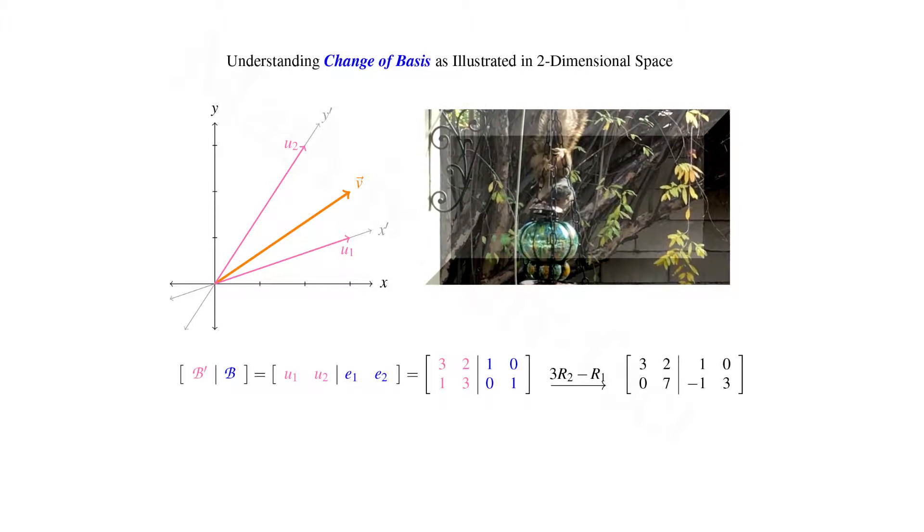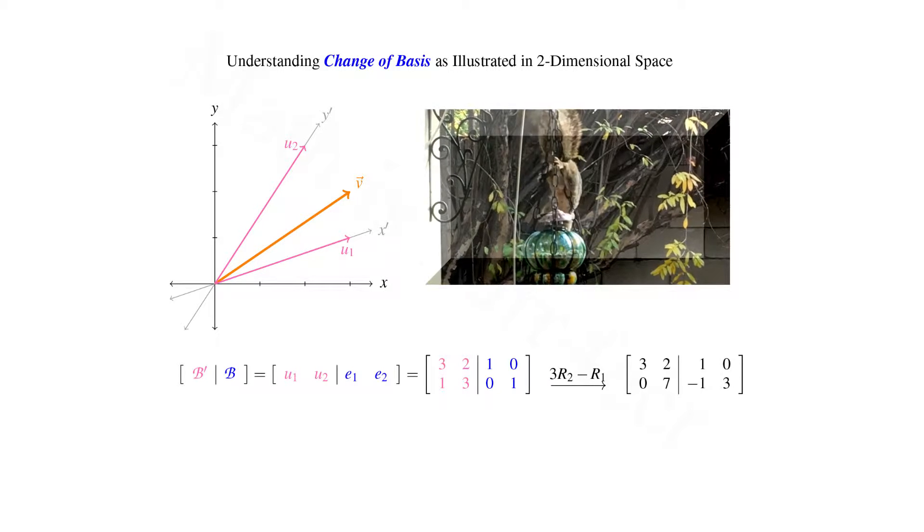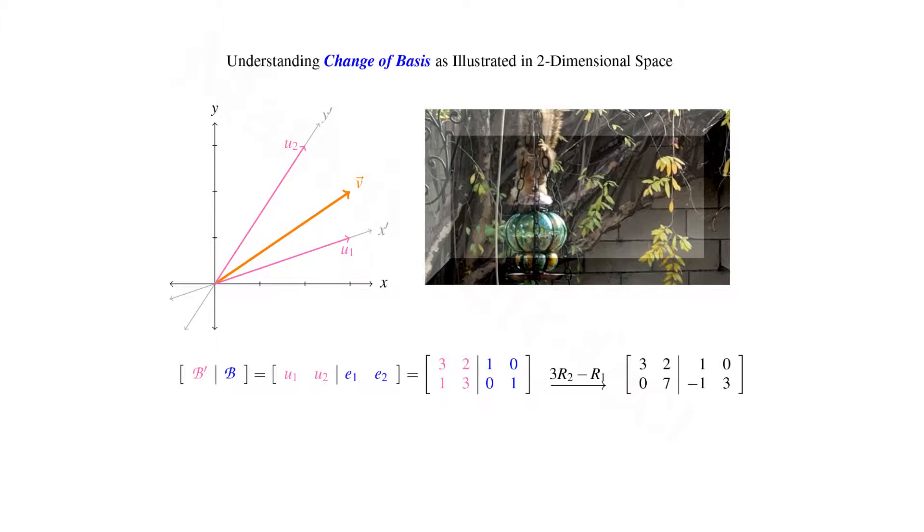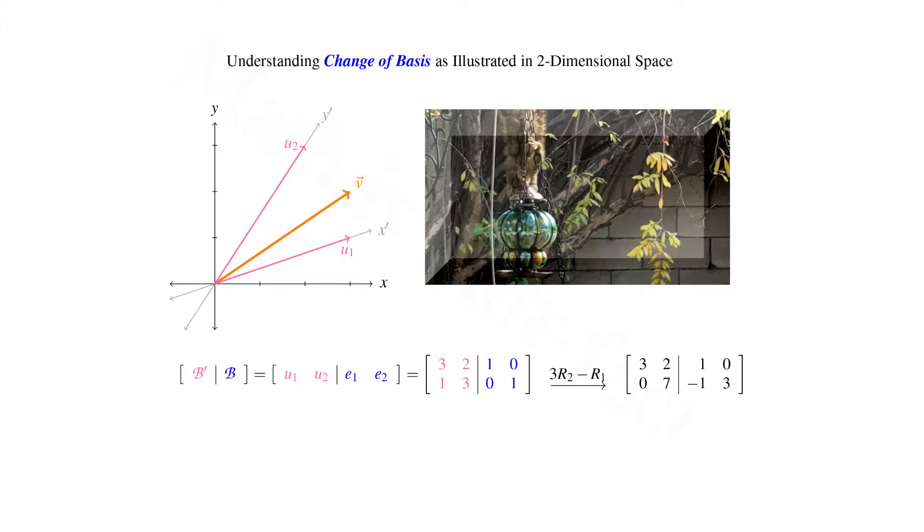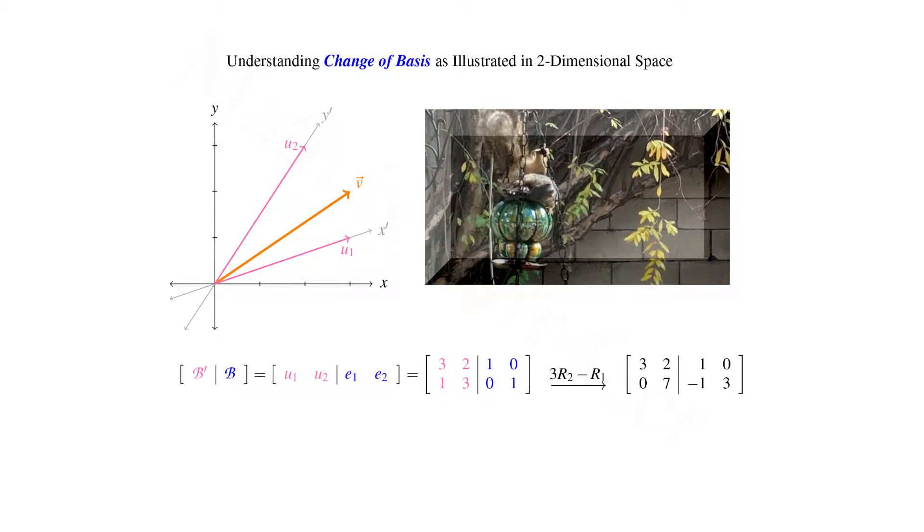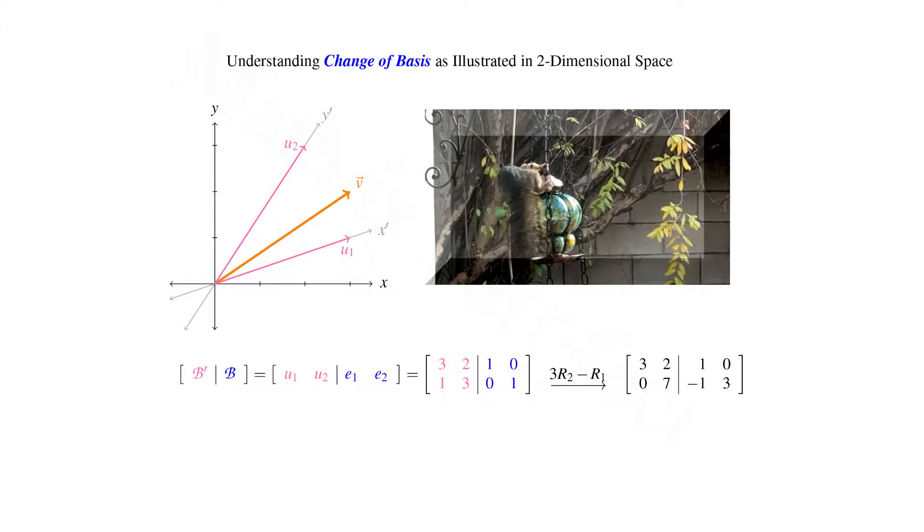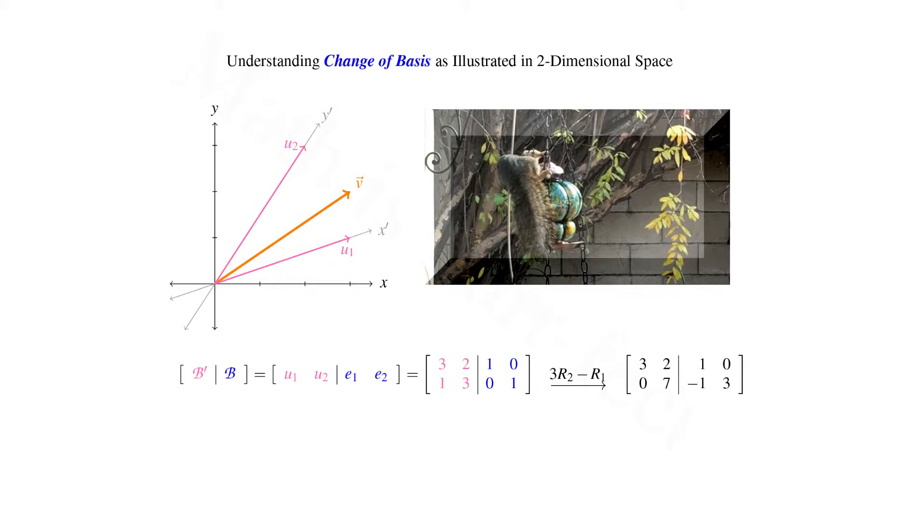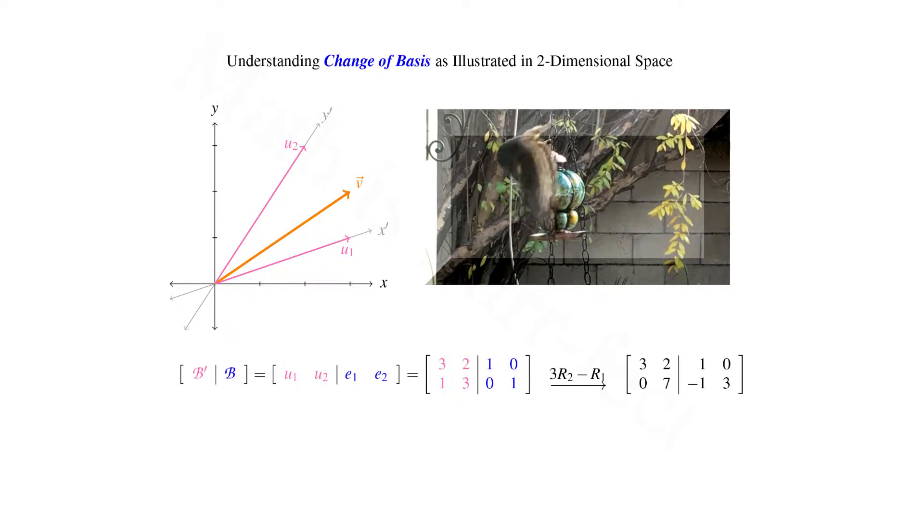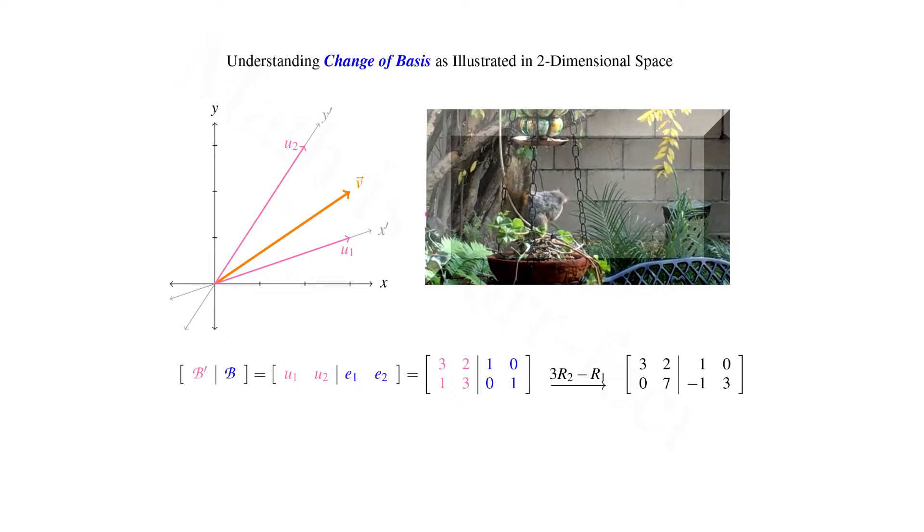We note that in order to zero out the 1 on the bottom left of the matrix, we can take 3 times row 2 minus row 1. So row 1 remains unchanged, but now row 2 must have its entries multiplied by 3, and then we subtract the corresponding entries from row 1. So the second row becomes 3 times 1 minus 3, which equals 0. Then 3 times 3 minus 2, which equals 7. Then on the right of the augment, we get 3 times 0 minus 1, which equals negative 1. And finally, 3 times 1 minus 0, which equals 3.